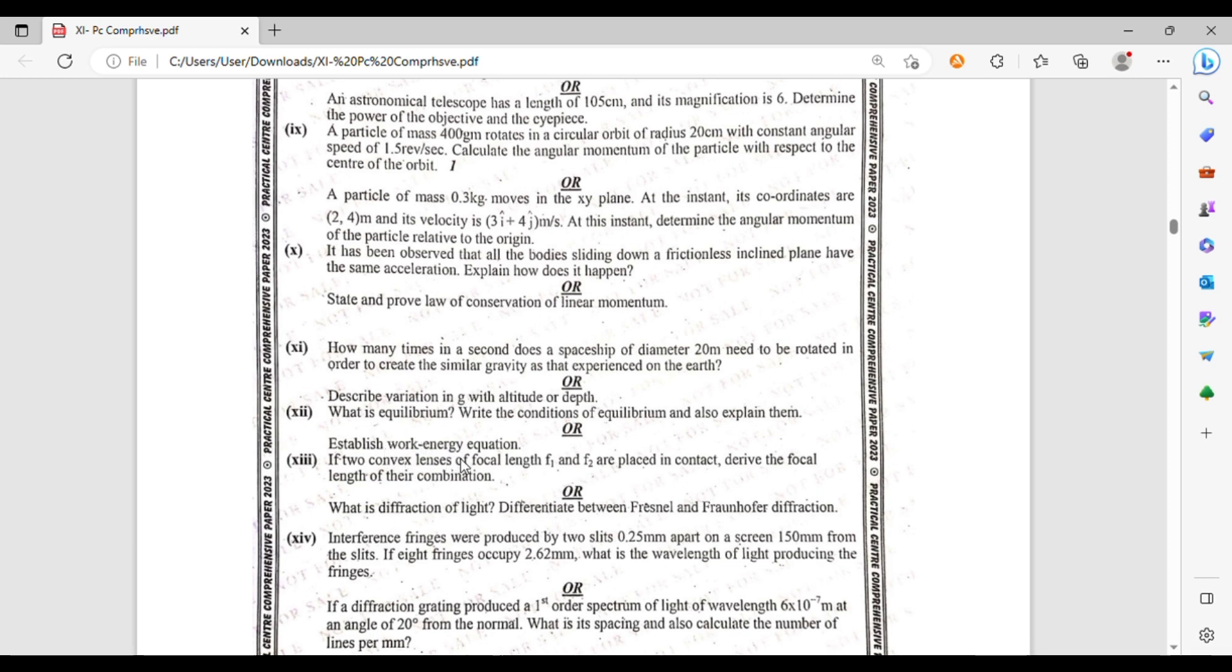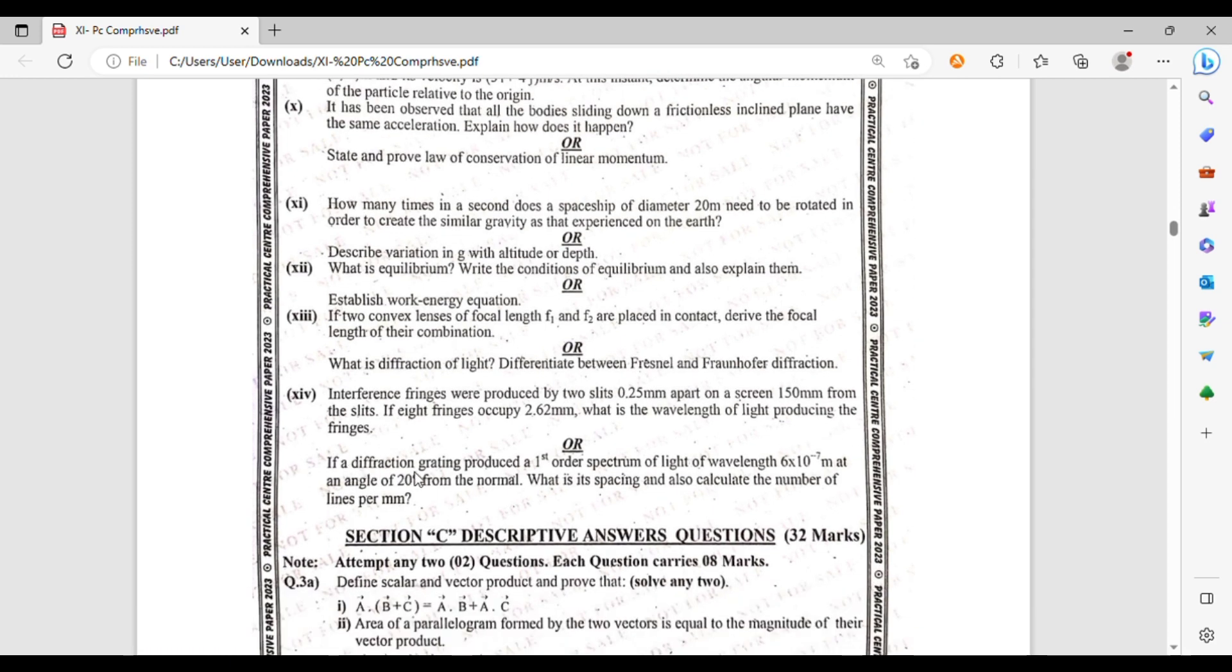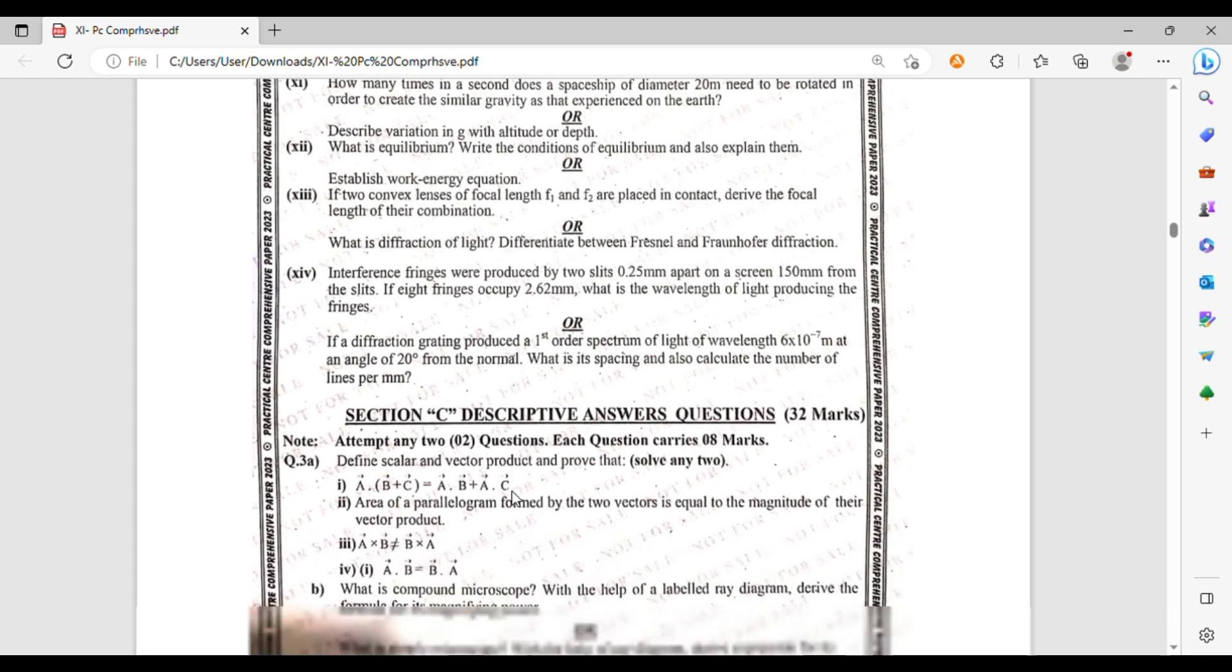Question number 12: what is equilibrium? What are the conditions of equilibrium and also explain them? Or establish the work-energy equation. Question number 13: two convex lenses of focal length f1 and f2 are placed in contact. Derive the focal length of their combination. Or what is diffraction of light? Difference between diffraction and interference. Question number 14: interference fringes were produced by two slits 0.25 millimeter apart on a screen 150 millimeter from the slits. If 8 fringes occupy 2.62 millimeter, what is the wavelength of light producing the fringes? Or if a diffraction grating produces a first order spectrum of light of wavelength 6 times 10 to the power minus 7 m at an angle of 20 degrees from the normal, what is the spacing and the accurate number of lines per millimeter?